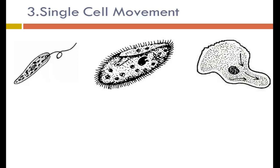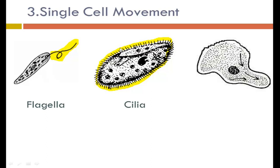The next question is about single-celled movement, showing three different single-celled organisms. The first organism has a long whip-like tail called a flagella; it spins that tail to paddle itself through its environment. The second organism has cilia — hair-like oar structures all around the outside — that beat in one direction, similar to a rowing boat. The third organism uses a pseudopoda: it extends part of itself and drags itself along that extension. Pseudopoda means 'fake foot.'